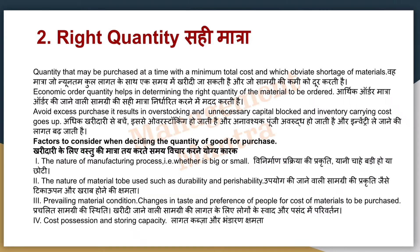Quantity purchase करते समय कुछ factors consider करते हैं। First है manufacturing process का nature — क्या process बड़ी है या छोटी है। Second है material का nature — वो durable है या perishable है, मतलब टिकाऊ है या जल्दी खराब हो जाता है। अगर material जल्दी खराब होता है तो आप कम quantity लेंगे। आप material की cost और possession cost देखते हैं, storing की क्या capacity है। Right quantity purchase करें — ताकि माल खराब न हो, waste न जाए, overstocking न हो, capital block न हो, ज़्यादा cost न आए — इसके लिए economic order quantity use करें।